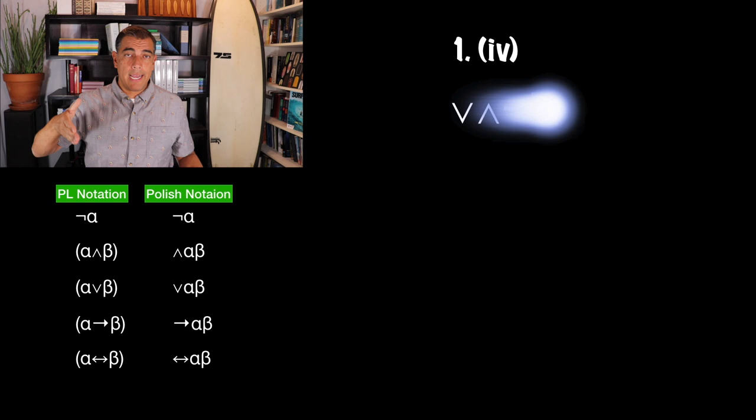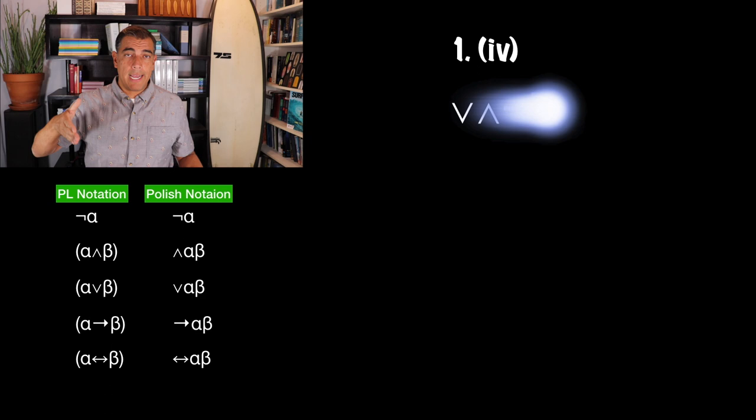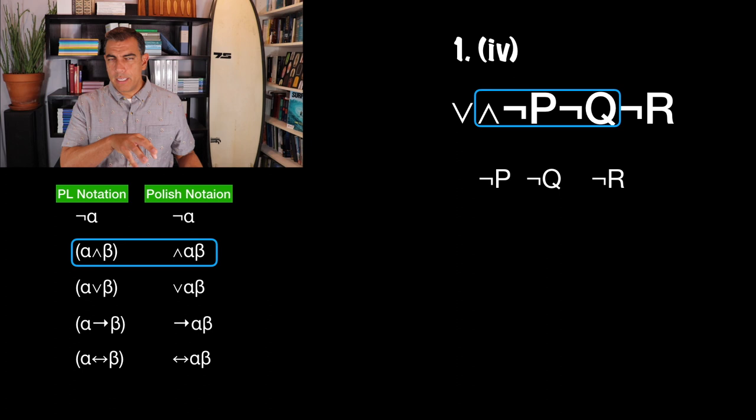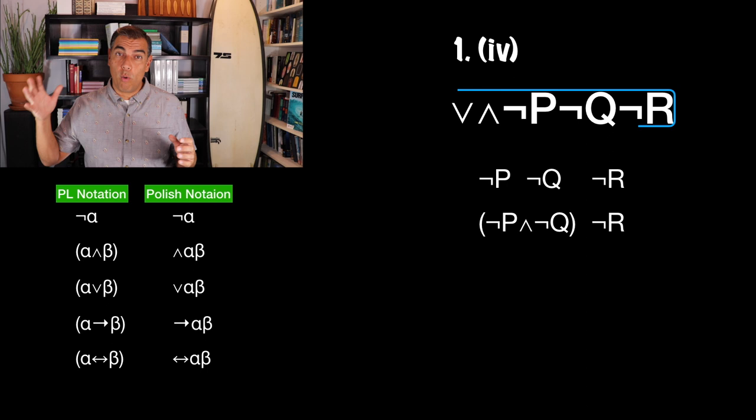Number four says or not P not Q not R. Obviously all the nots go with just those basic propositions: not P, not Q, not R. We have the and symbol with not P and not Q following it, so that's going to have to be a conjunction: not P and not Q. Then we have the or symbol at the very beginning: not P and not Q or not R.